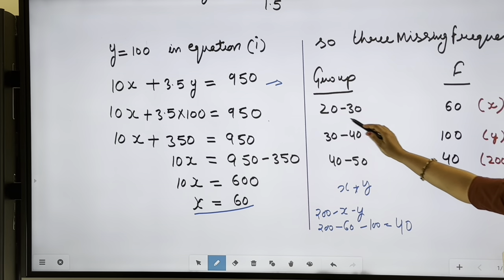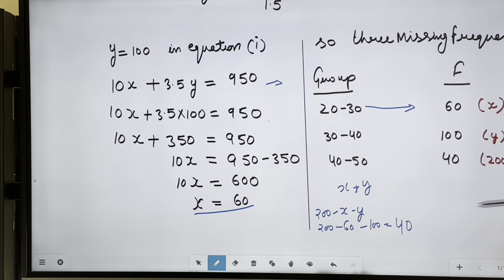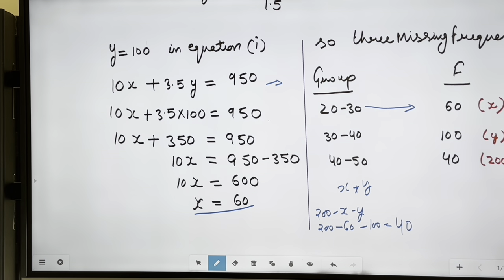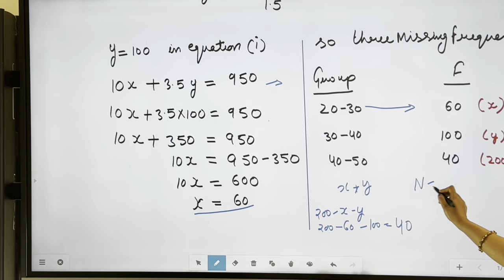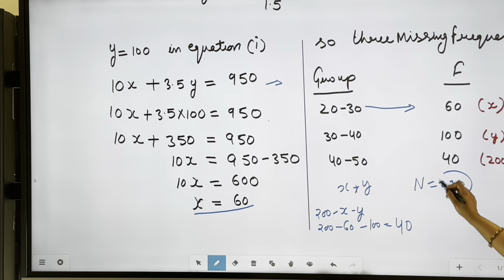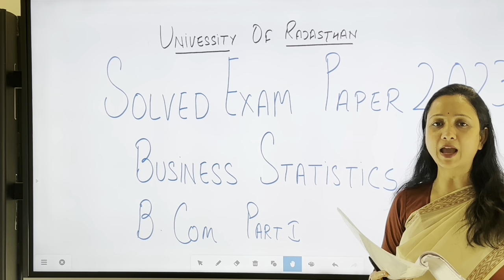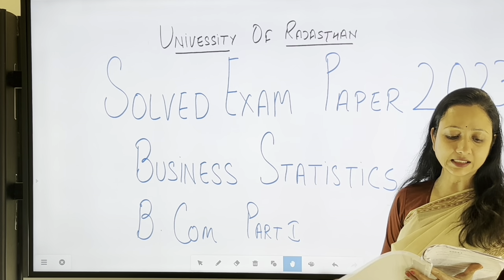So the missing frequency for 20–30 is 60, for 30–40 is 100, and for 40–50 is 40. You can verify by adding all frequencies; the total must equal N = 230. That is confirmed and clear.